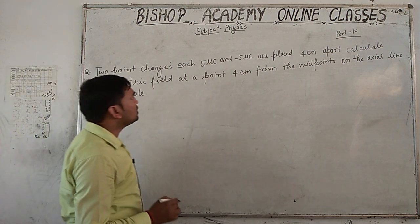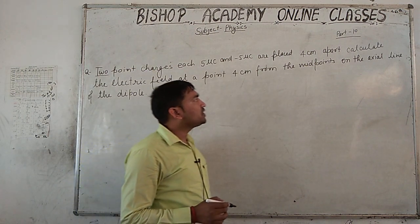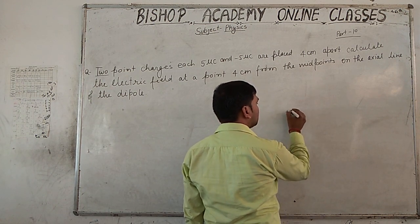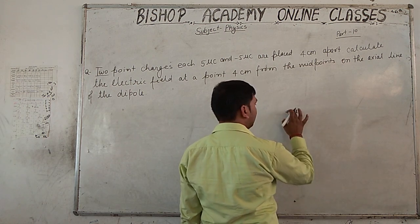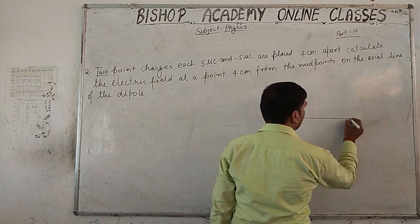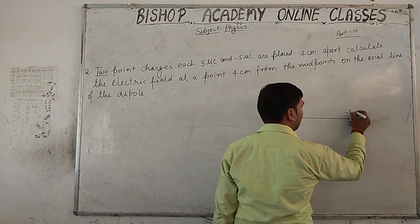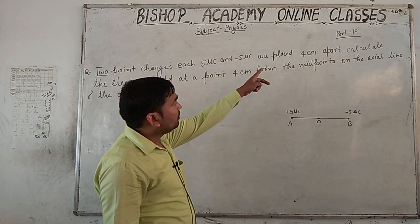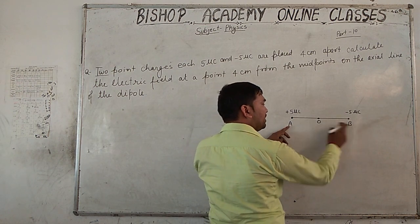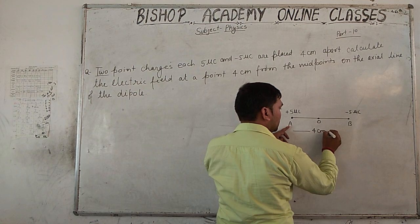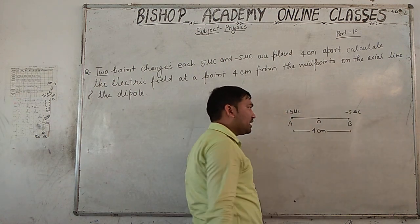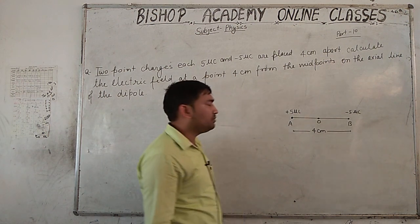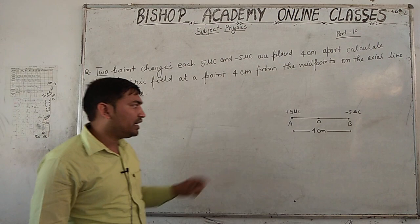Question 1: Two point charges, each +5 µC and −5 µC, are placed 4 cm apart. Point A has the +5 µC charge and point B has the −5 µC charge; O is the center of the dipole. The distance between A and B is 4 cm. This forms an electric dipole — two equal and opposite charges separated by a small distance.